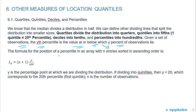The formula for the position of a percentile in an array with n entries sorted in ascending order is: Ly = (n + 1) × (y/100). This is the key point: you have to understand y. Y is the percentage point at which we are dividing the distribution.